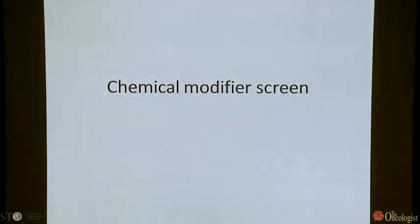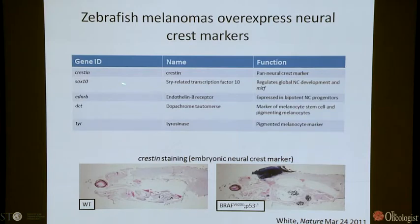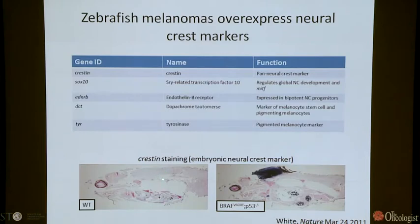Switching to our chemical modifier approach: early in working with the melanomas, we performed expression profiling of the zebrafish melanomas. We noticed that these BRAF P53 melanomas tended to express very high levels of genes associated with the neural crest stem or progenitor cell — particularly Crestin, Sox10, and EDNRB — and surprisingly very low levels of melanocytic markers DCT and tyrosinase. In a wild-type fish sectioned longitudinally, Crestin is essentially completely absent, as expected. But in the tumors, virtually the entire tumor is positive for this early embryonic neural crest marker.